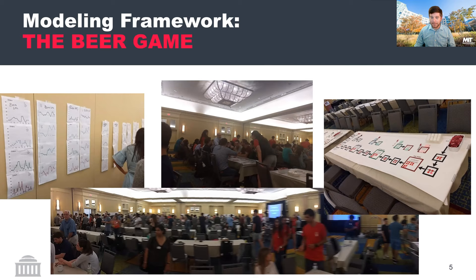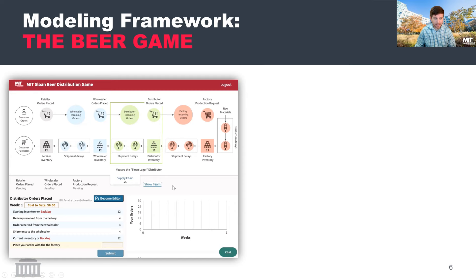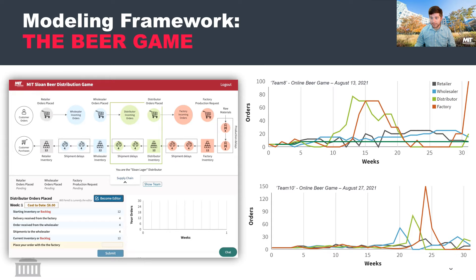The last 18 months haven't slowed us down. While we can't do a lot of this in person, we've moved online. This online environment still elicits from players these classic bullwhip outcomes — specifically, you can see right there the amplification and phase shift from that initial order signal.